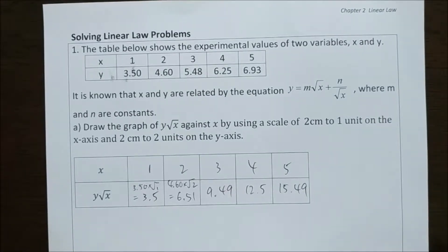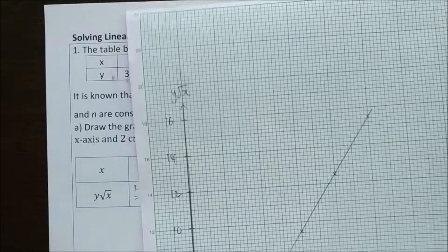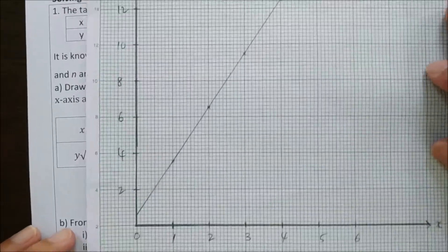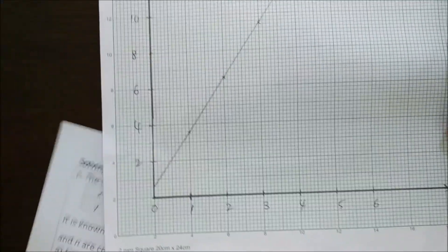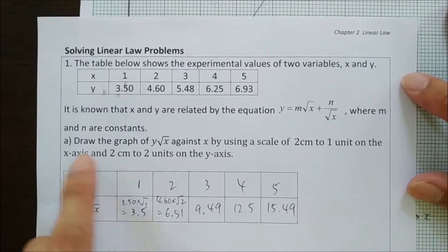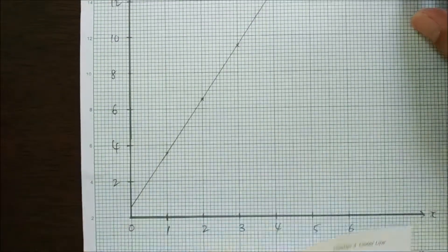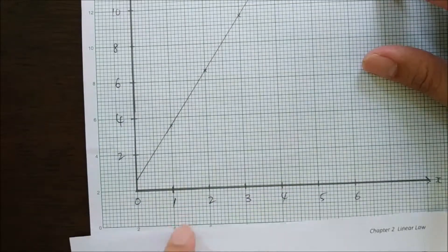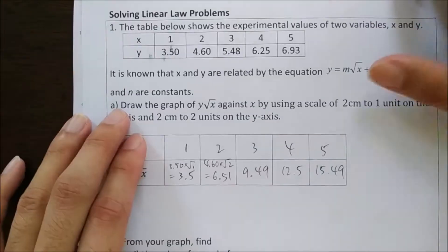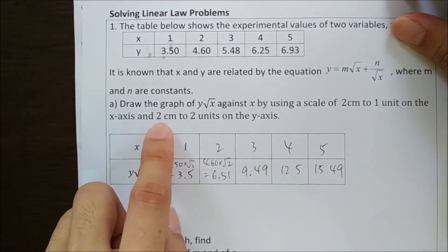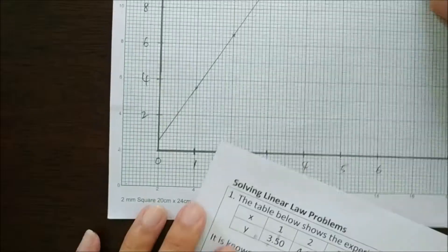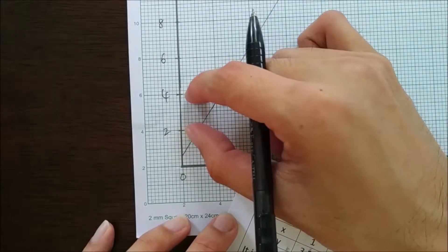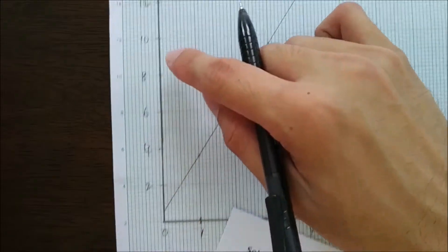Since we already have all the values, we can start to plot the graph. The x-axis uses a scale of 2 cm to 1 unit, so we have values 1, 2, 3, 4, 5, 6. For the y-axis, we have 2 cm to 2 units, meaning every 2 cm the value increases by 2: so 2, 4, 6, 8, and so on.